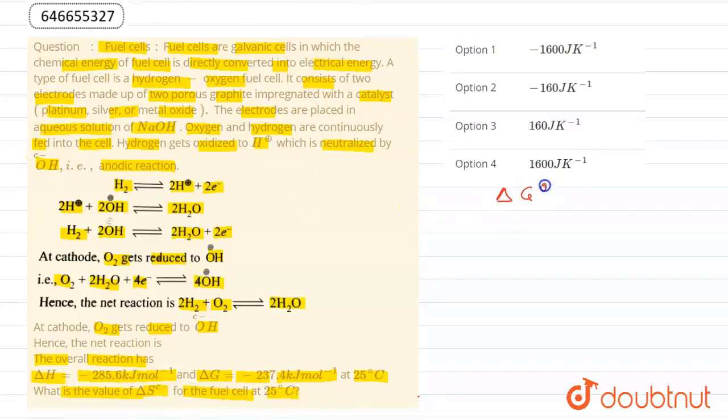In the question, we are given ΔG° = -237.4 kJ/mol and ΔH° = -285.6 kJ/mol. Temperature is given: T = 298 K.